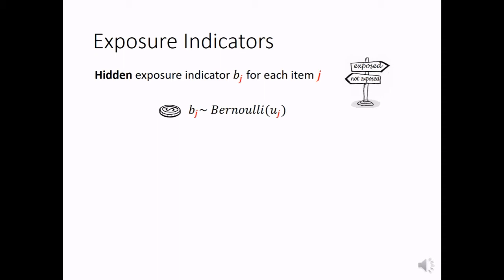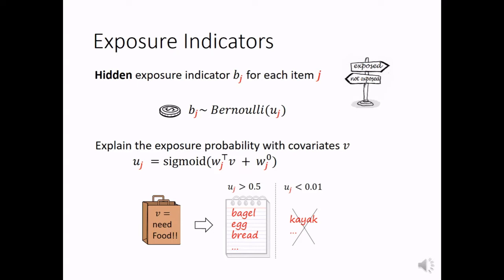We can use some covariates to fit the exposure probability. For example, if the purchase is a grocery purchase, then the items in the food category will have higher exposure probability. But the exposure probability for kayak will be very low. If we don't have such covariates, then we only use this intercept term to fit the exposure probability, which often represents the popularity of the item.